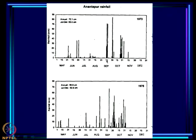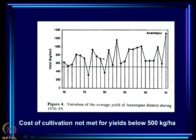There is a lot of variation from year to year in the timing of wet spells and the timing and length of dry spells. This leads to very large variation in yield of crops like groundnut, which are rain-fed crops and therefore very sensitive to the rainfall of the region.